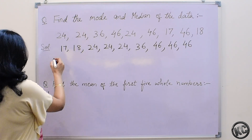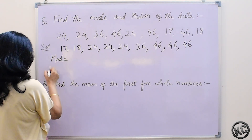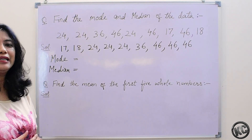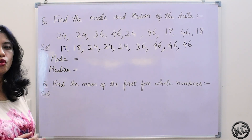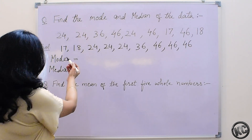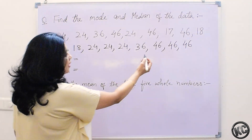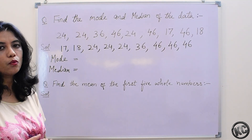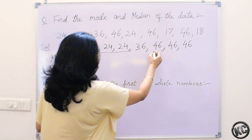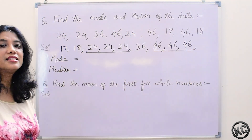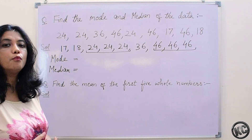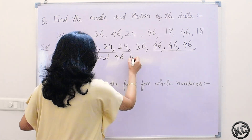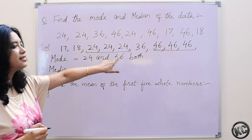Now we will find the mode and median. Mode is the most frequently occurring observation. Here we have 24 which occurs 3 times and 46 which is also occurring 3 times. Mode can be more than 1, so here there are 2 modes. Both 24 and 46 are occurring the same number of times and maximum number of times, so mode will be 24 and 46.